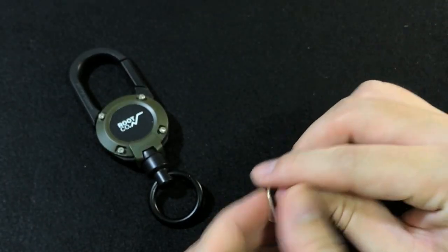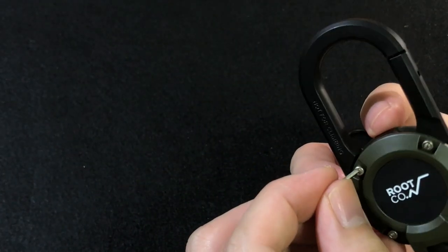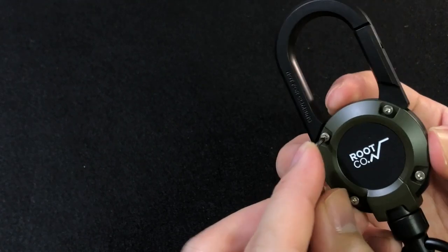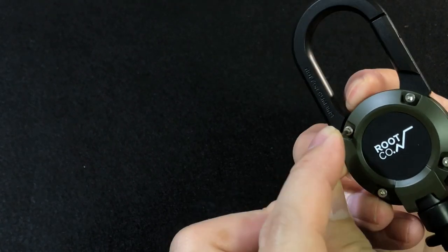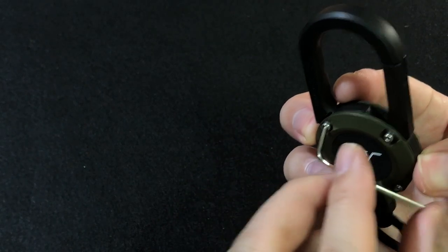The box does include a hex key for you to unlock and lock the padlock-looking keychain. I guess it is something for you to tighten if it gets loose over time.